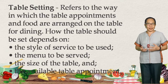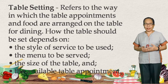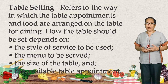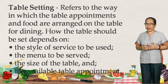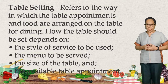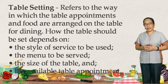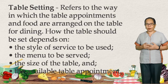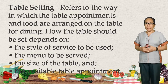Table setting refers to the way in which the table appointments and food are arranged on the table for dining. How the table should be set depends on: first, the style of service to be used; next, the menu to be served; the size of the table; and the available table appointments.